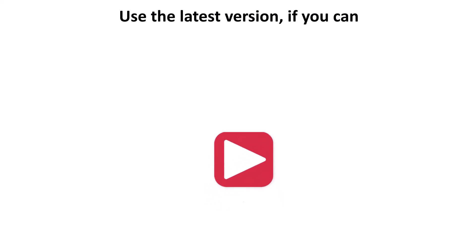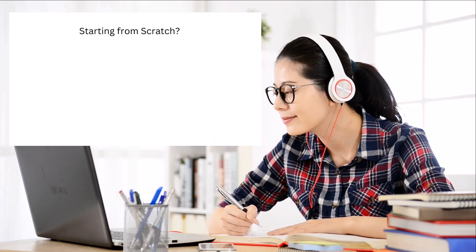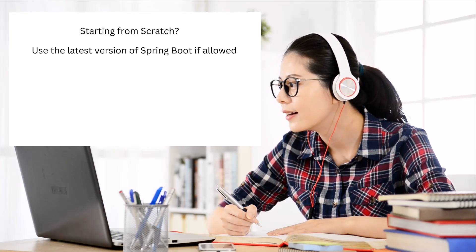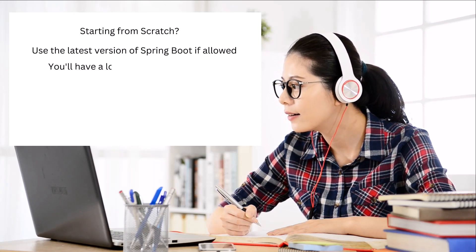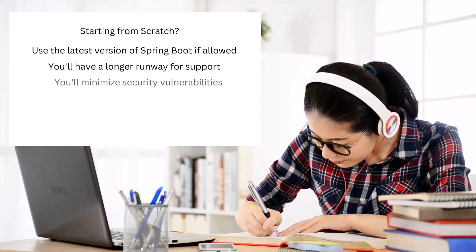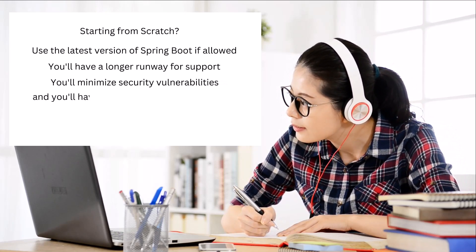Coming in at number 9: use the latest features, or don't. Spring Boot 3 is built on and requires Spring Framework version 6. If you're starting a project from scratch and can choose, using the latest version is the best way to go. You'll have a longer runway for support, you'll minimize the number of security findings, and you'll have all the latest features to take advantage of.